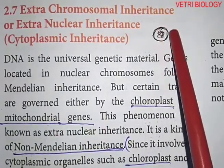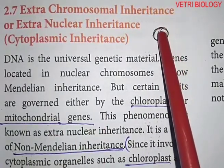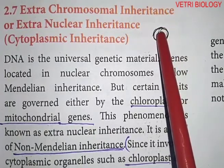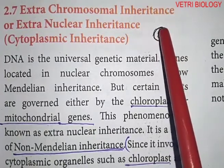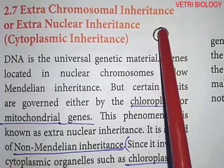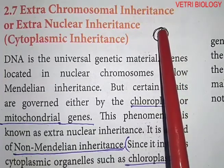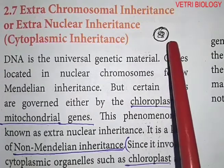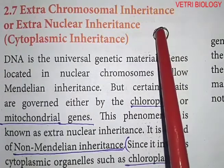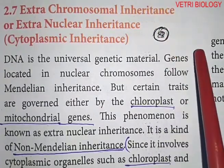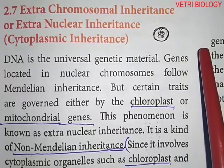In the nucleus there are chromosomes, and in the chromosomes there are genes. The genes are made of DNA. These genes are involved in the inheritance of characters — characters are transferred from one generation to the next through genes.